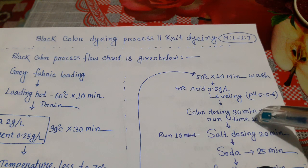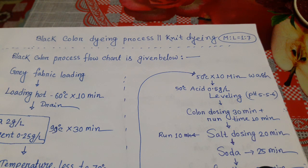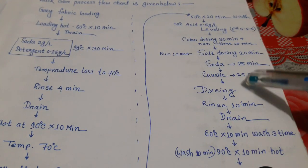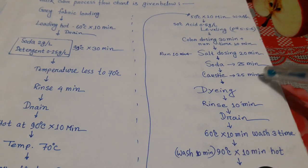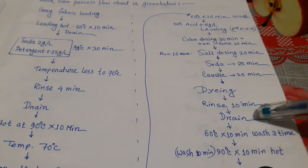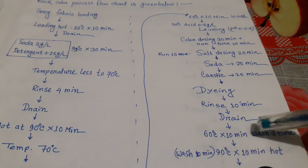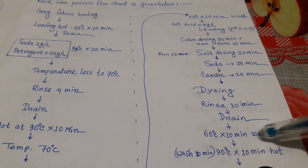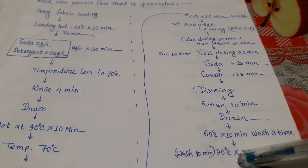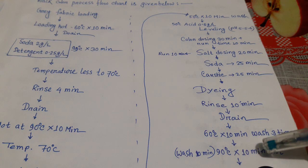Then salt dosing for 20 minutes, then soda dosing for 25 minutes, then caustic for 25 minutes. Then rinse for 10 minutes and drain. Then wash at 60 degrees centigrade for 10 minutes, 3 times. Then hot wash at 90 degrees centigrade for 10 minutes.